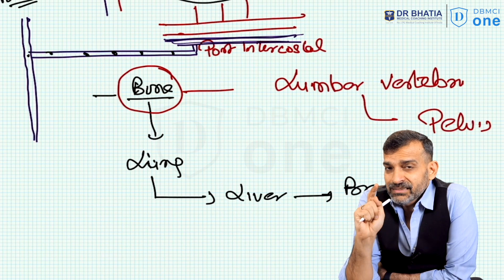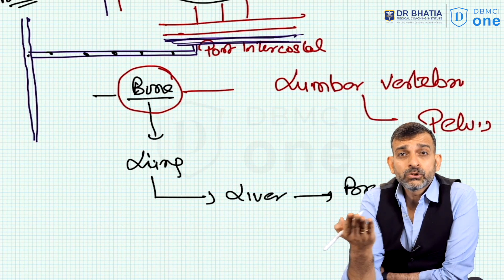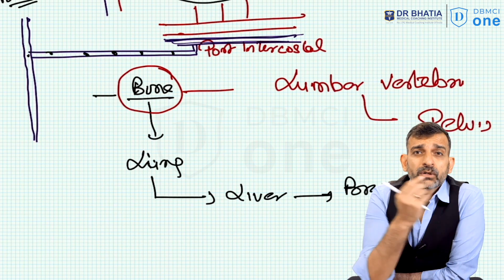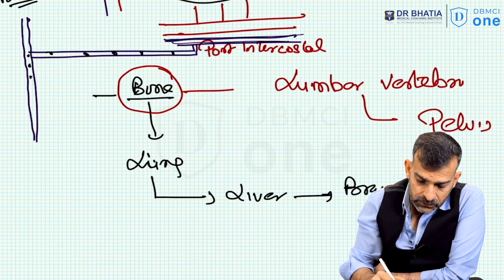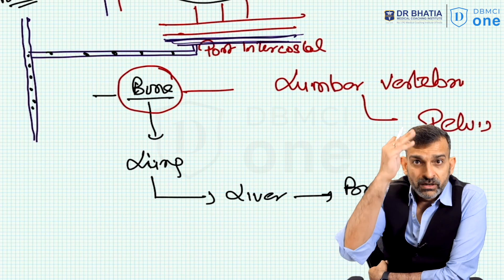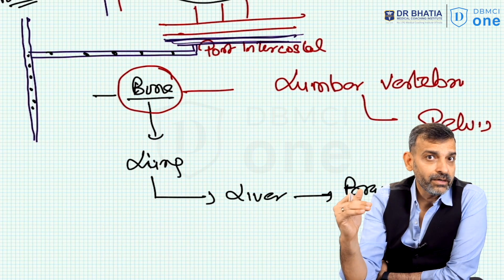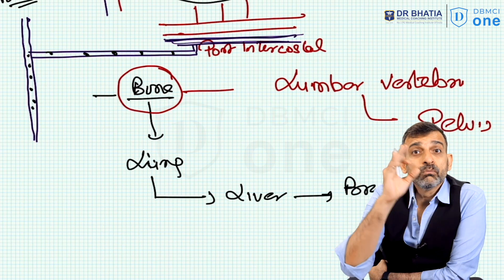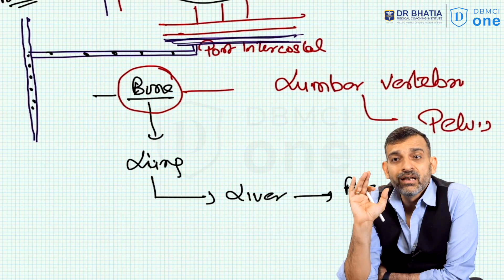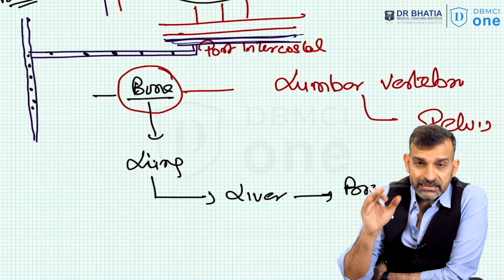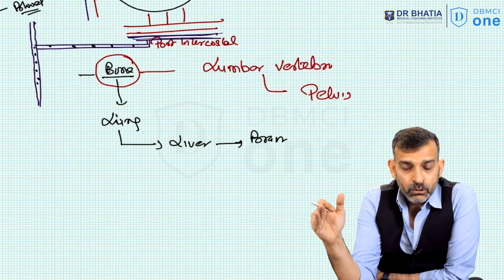Once malignant cells reach the Batson's plexus, one might expect them to involve the thoracic vertebra first since that's where they arrive. However, these metastatic cells settle downward due to gravity, ending up at the lumbar vertebra. So most of the time it first involves the lumbar vertebra. How metastasis reaches the vertebra is also a recent AIIMS/INICT exam question.